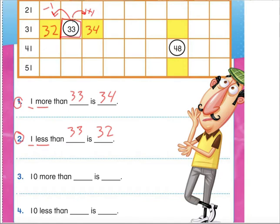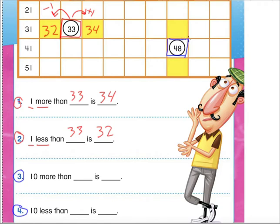When we jump forward one it is going to be like saying plus one — we're going to make it one bigger. And when we go backwards it's like saying minus one and we're going to get smaller just by one. For number three and number four we are going to focus on this other number on our 100 chart — the number 48. Instead of saying one more or one less, they want to know what is 10 more than 48.